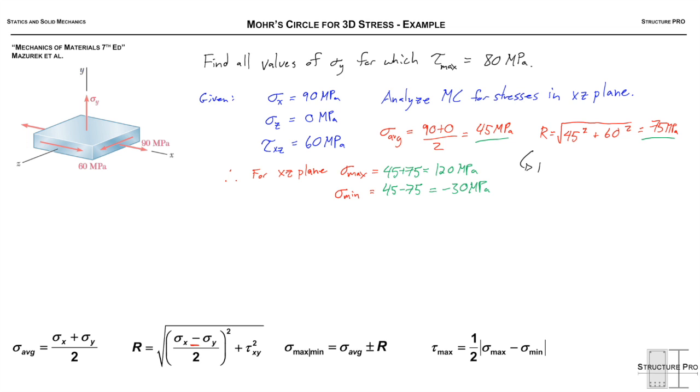We note that R equal to 75 is also our tau max for the XZ plane, but we're cautious now. We know that might not be the tau max overall because we don't know what Sigma Y is. We want tau max to be 80 MPa, therefore we need a larger circle than this Mohr's circle for the XZ plane because that only has a radius of 75. Our circle is going to have a radius of 80 MPa.